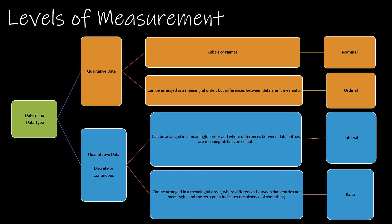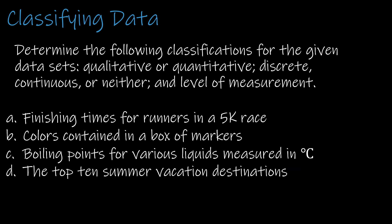I'm a very visual learner, so I've made a graphic to help summarize data types, as many people struggle with determining them. For qualitative data: if it's labels or names, it's nominal; if it can be arranged but differences aren't meaningful, it's ordinal. For quantitative data: we might look at discrete or continuous; if it can be arranged in a meaningful order but zero is not important, that's interval; if zero indicates the absence of something, that is ratio.